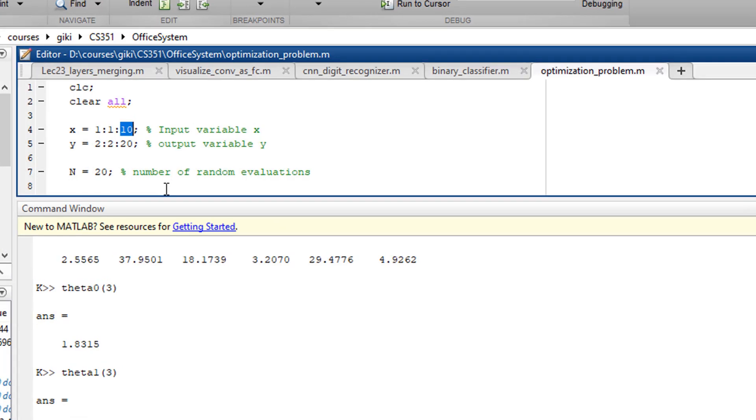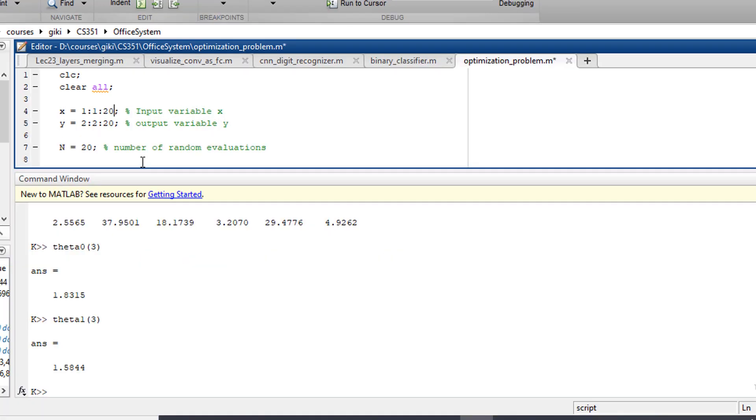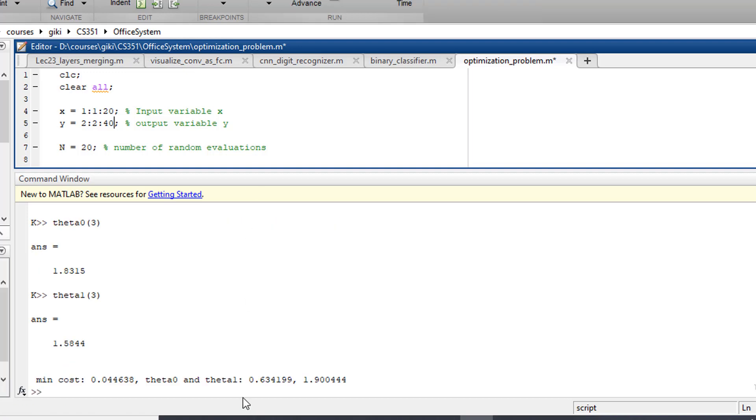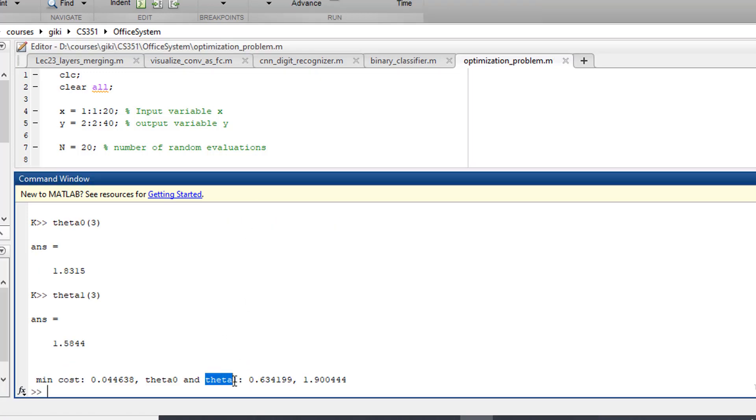For example let's extend the dimensionality of x and y to 20 from 10 and run the simulation again. This time we get minimum error in 20 trials with theta 0 is 0.63 and theta 1 is 1.90. We suggest that f of x is equal to 0.63 plus 1.90 times x.